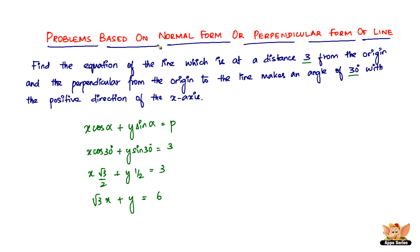So, this is what you have to do for these kind of problems. All you have to do to solve problems based on the normal form or perpendicular form is identify the data that is alpha and p. Once you get the values of alpha and p, all you have to do is just substitute the values of them in this equation, and there you are.